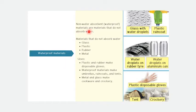Waterproof materials, non-water absorbent materials, are materials that do not absorb water. Materials that do not absorb water, such as glass, plastic, rubber, and metal. Plastic and rubber make disposable gloves. Waterproof materials make umbrellas, raincoats, and tents. Metal and glass make cookware and crockery. Examples include glass with water droplets, plastic raincoat, water droplets on rubber tire, water droplets on aluminum can, plastic disposable gloves, tent and crockery. These are waterproof materials that cannot absorb water.